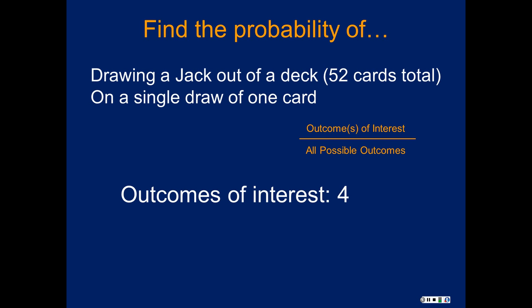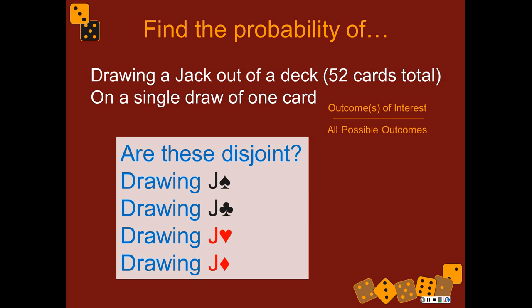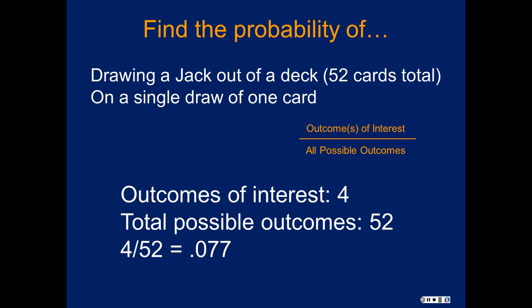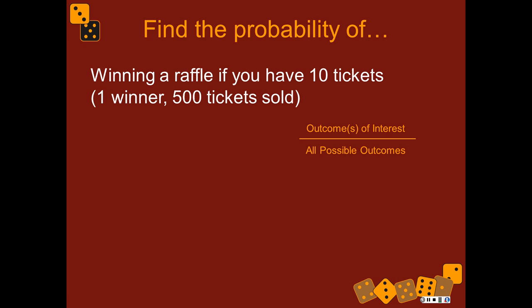So the number of things that could happen that we would be interested in — four things could happen, there are four jacks. And the total number of possible things that could happen when you draw that card are 52. Since they are disjoint events, it's four divided by 52 — 0.077, so almost 8%.